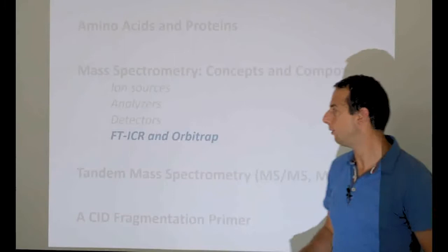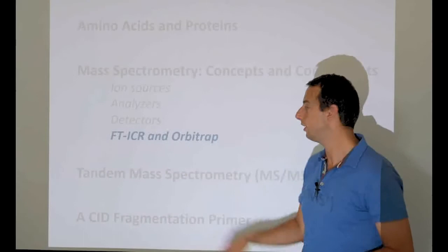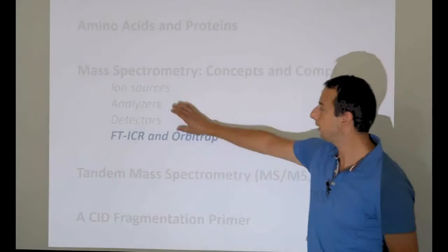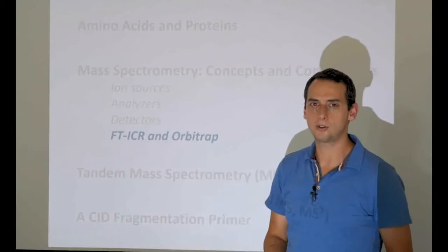Now we come to two special beasts that will sum up our entire talk about instrumentation: the Fourier transform ion cyclotron resonance and Orbitrap instruments. As I said before, they actually combine analyzer and detector in a very interesting way. Let's go and look at these very fancy instruments.